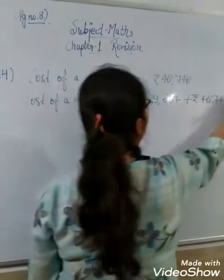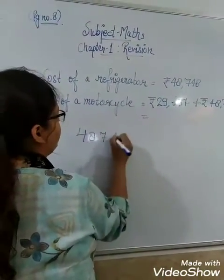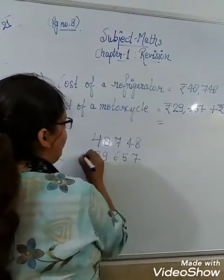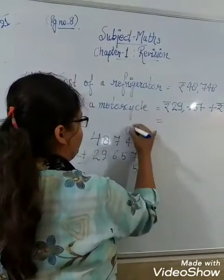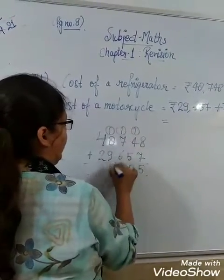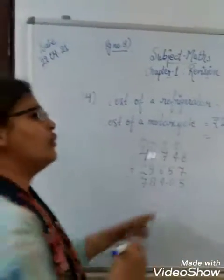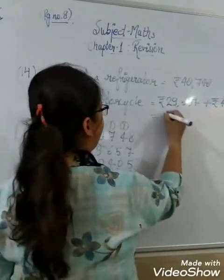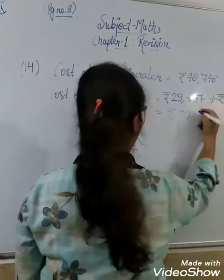So this is the price of a motorcycle. We have 48,748 plus 29,670. And we do addition: 8, 7, 6, 5, 0, 1, 10, 14, 16, 1. So the actual price for motorcycle is Rs. 78,405.